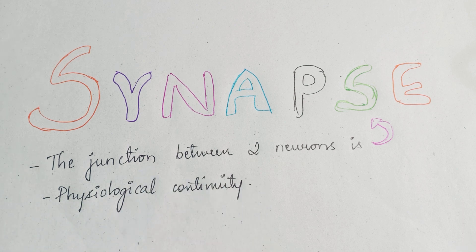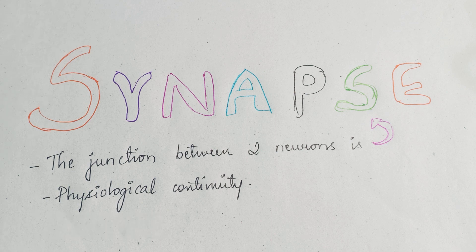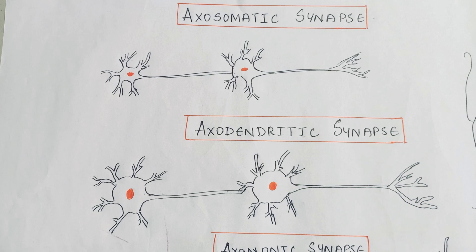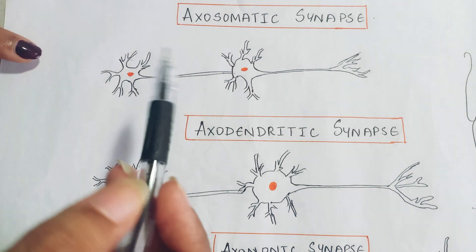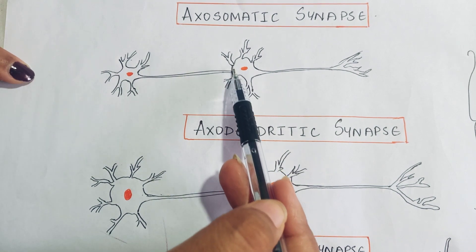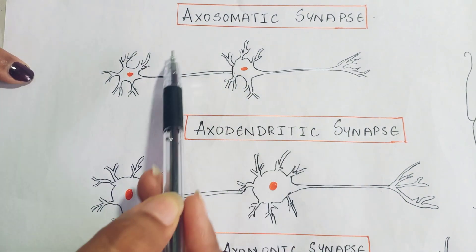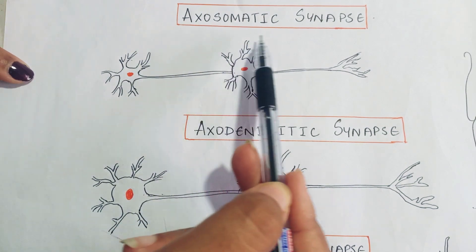This synapse is classified by two methods: anatomical classification and functional classification. In the anatomical classification, the axon of one neuron usually ends with the cell body, dendrite, or axon of the next neuron. Here you can see the axon of one neuron is in contact with the body of another neuron — hence it is called axosomatic synapse.